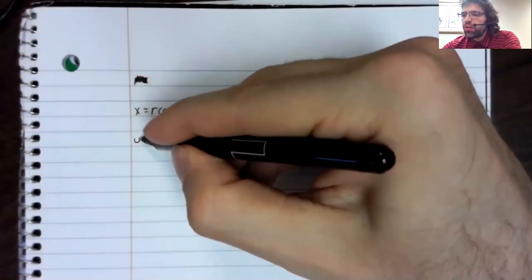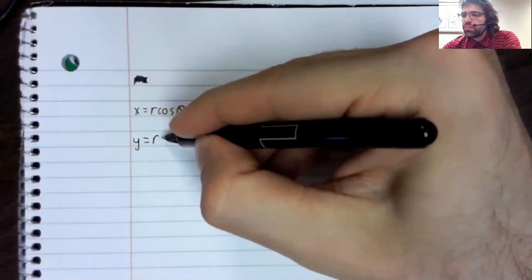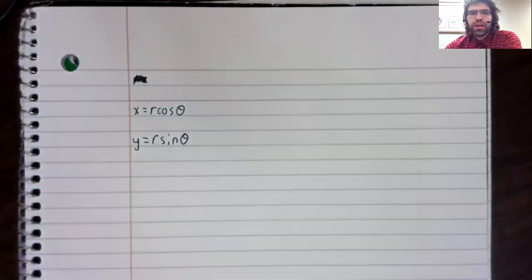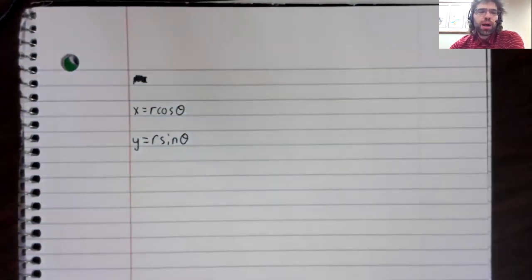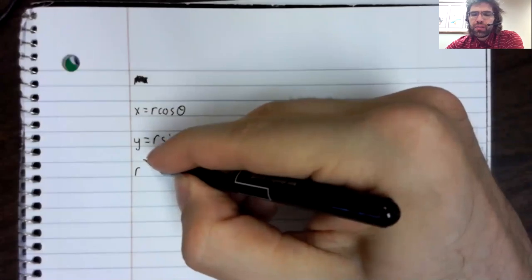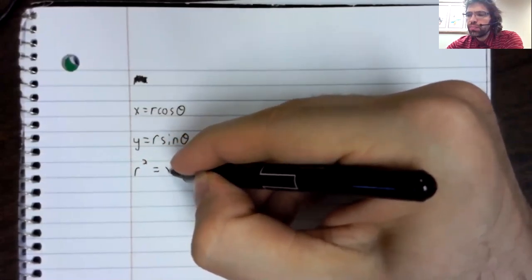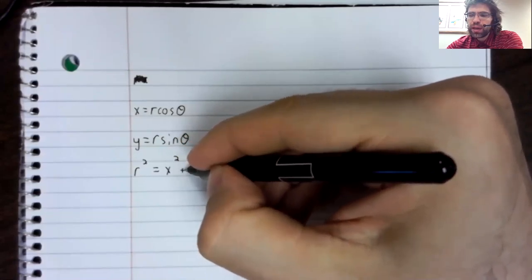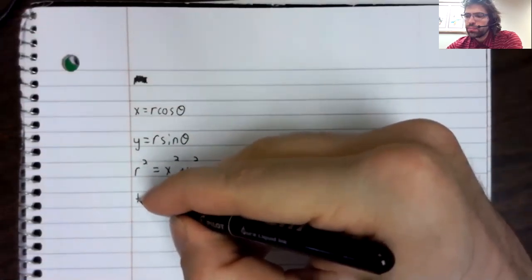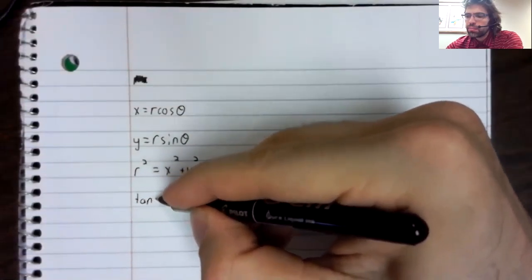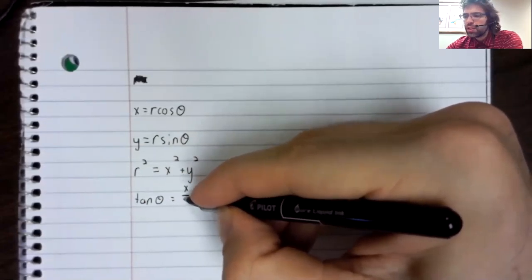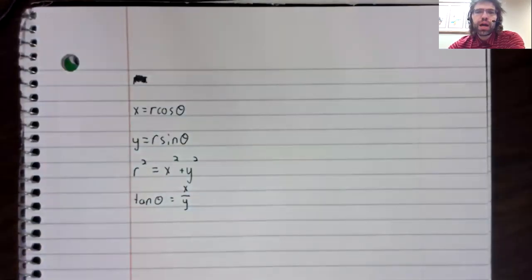Two of them we've already seen: the relationship between x and the cosine, and the relationship between y and the sine. We also have r squared equals x squared plus y squared.